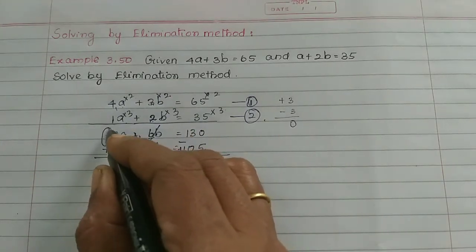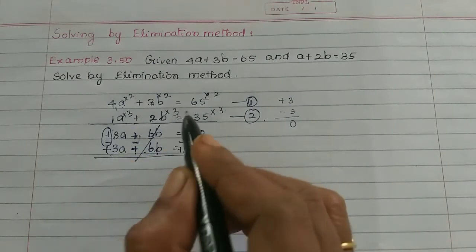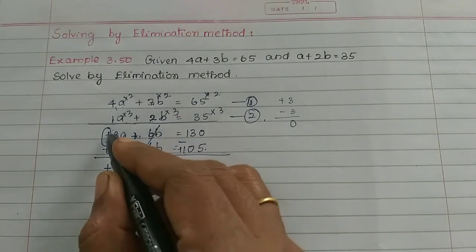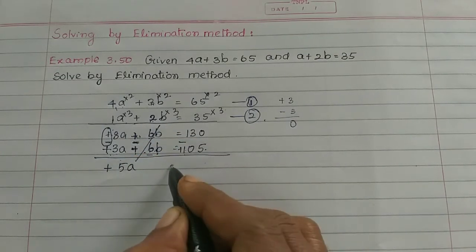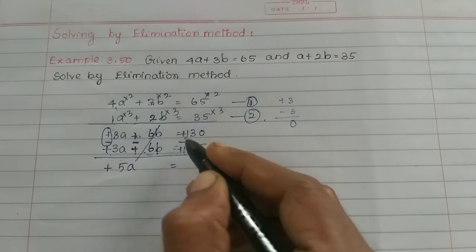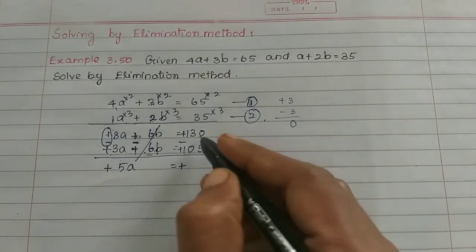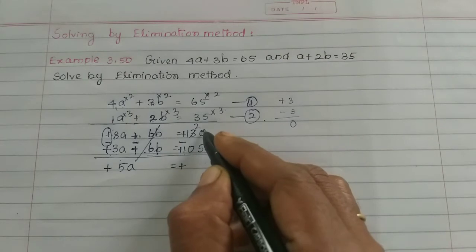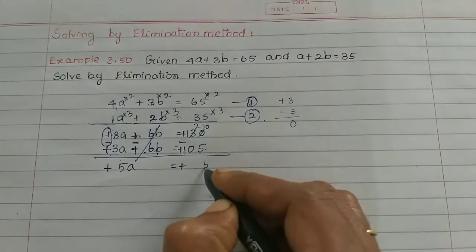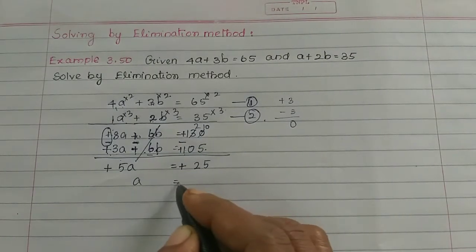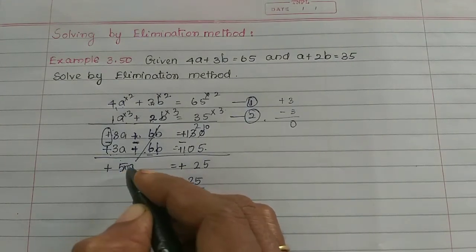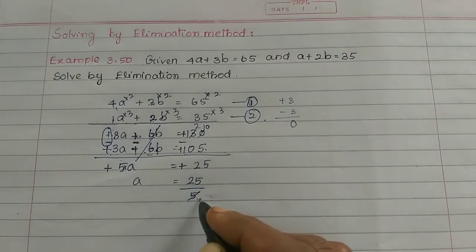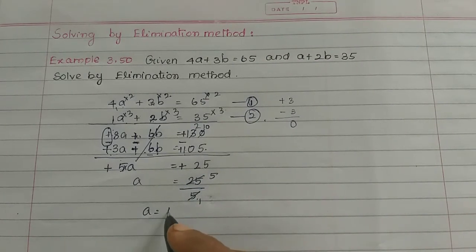Now subtracting: 8a minus 3a is 5a. The bigger number is 130 and the smaller is 105, so 130 minus 105 is 25. So 5a equals 25. Dividing: a equals 25 divided by 5, which gives a equals 5.